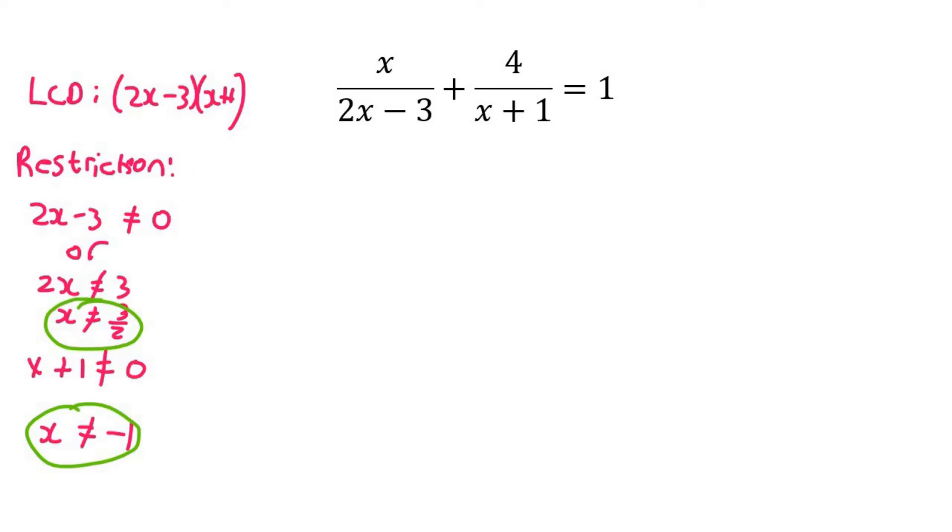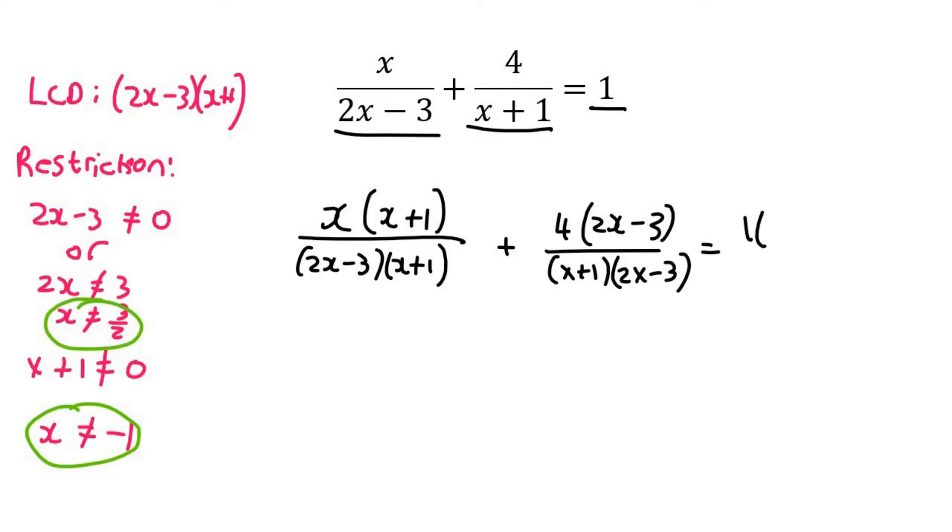Our lowest common denominator is 2x minus 3 and x plus 1. So this one is going to be multiplied by x plus 1, this is going to be multiplied by 2x minus 3, and this is going to get both. So we have something like that now.